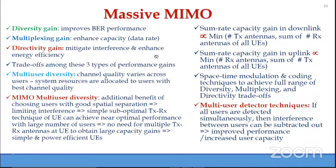The gains achievable with massive MIMO are: first, diversity gain — because we have multiple independently fading paths between any transmitter-receiver pair. If one path is in deep fade, other paths still have high channel gain. This significantly improves reliability compared to a single path under deep fade.